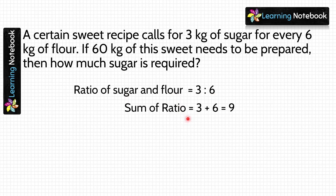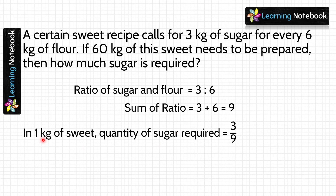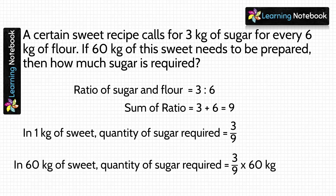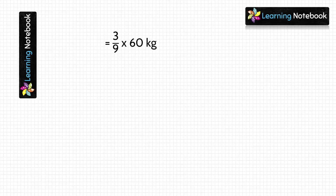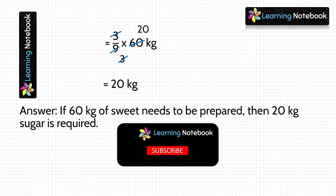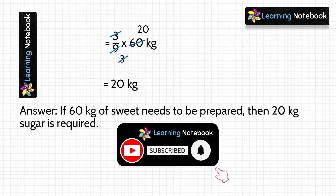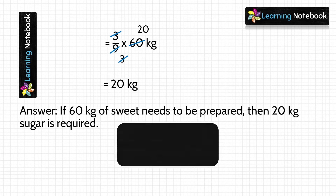So to prepare 1 kilogram of sweet, the quantity of sugar required is 3 by 9. So for 60 kilograms of sweet, quantity of sugar required is 3 by 9 into 60. Simplify and we get 20 kilograms. So if 60 kilogram of sweet needs to be prepared, then 20 kilogram of sugar is required.